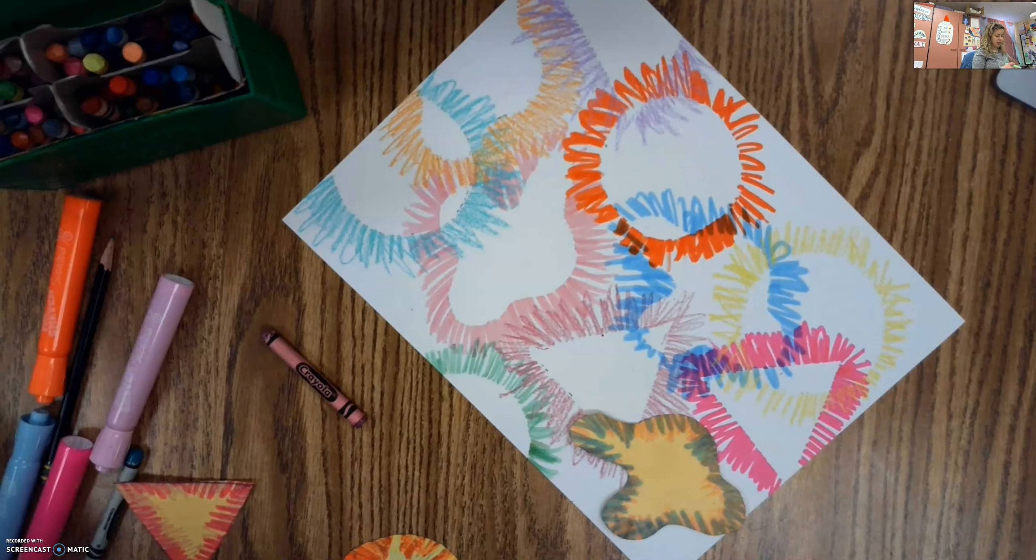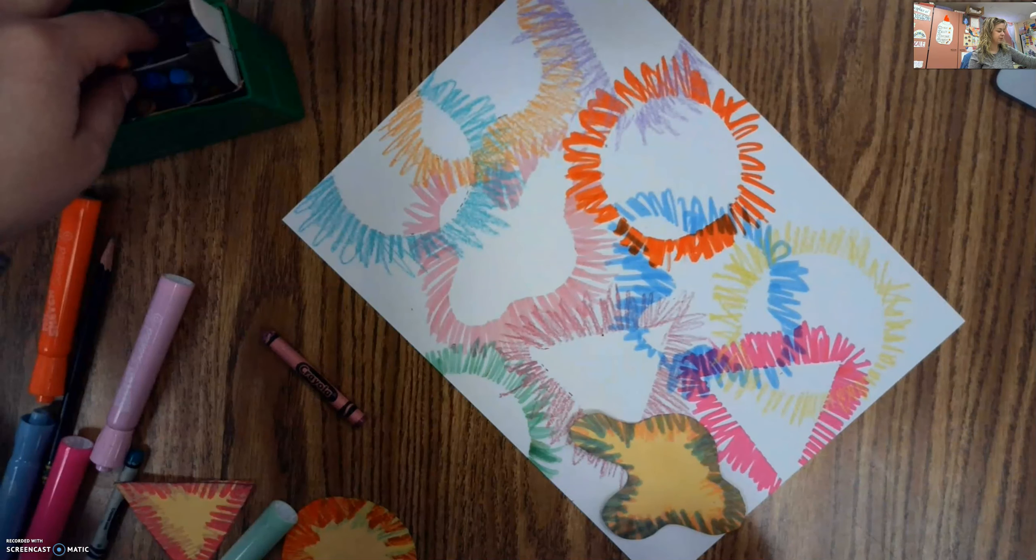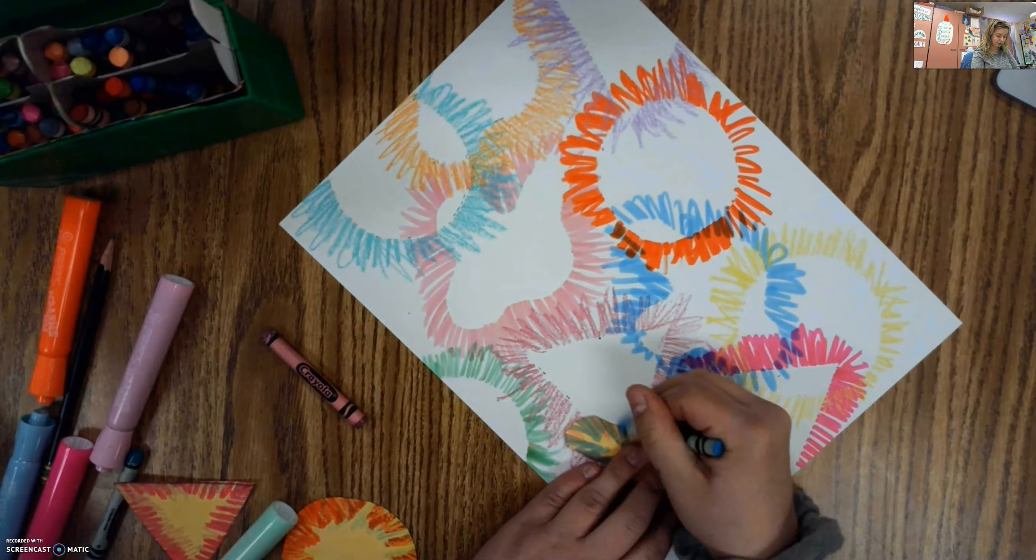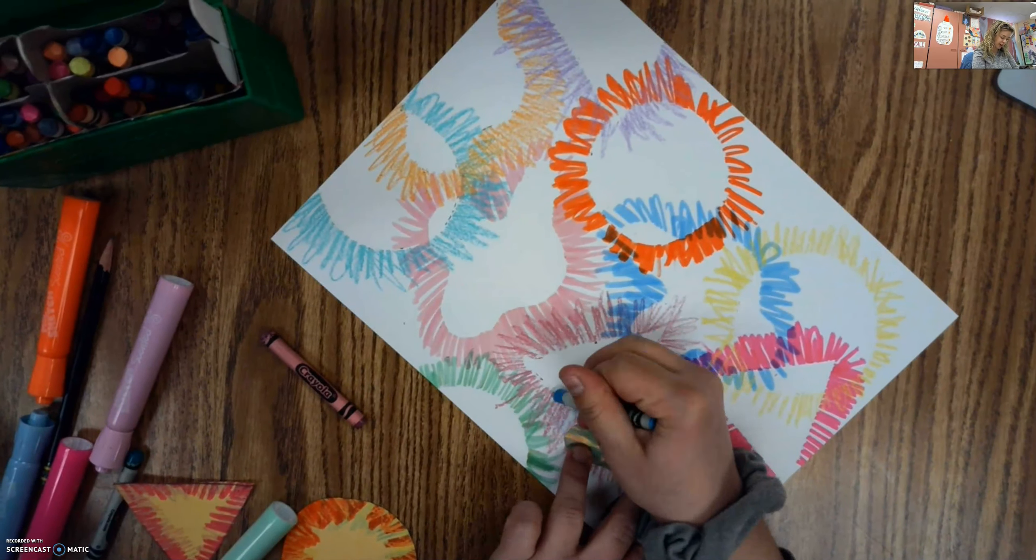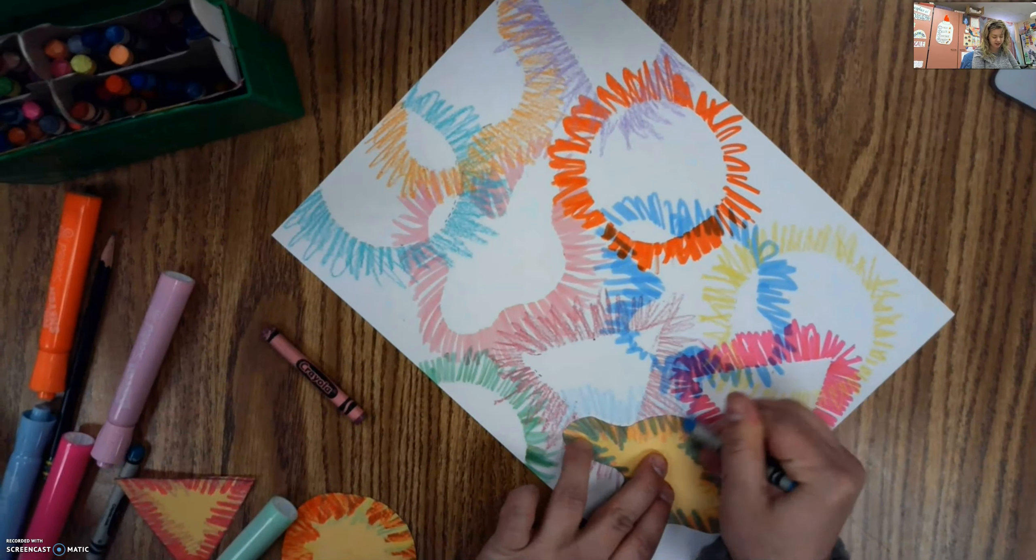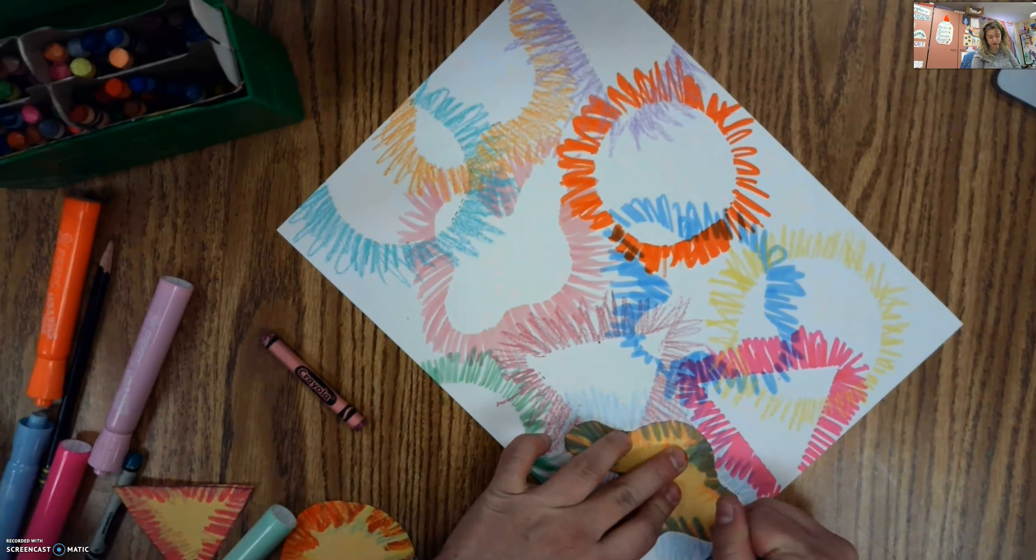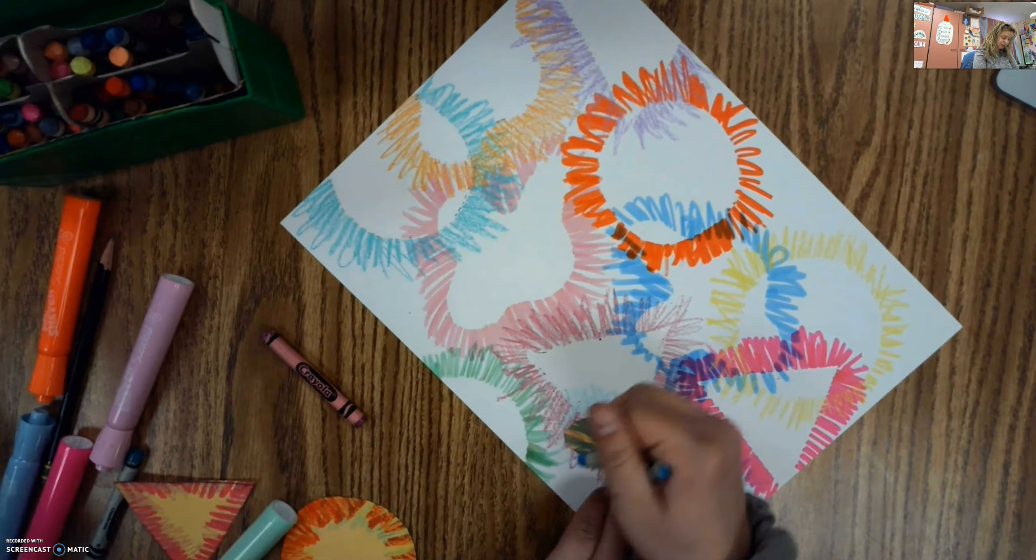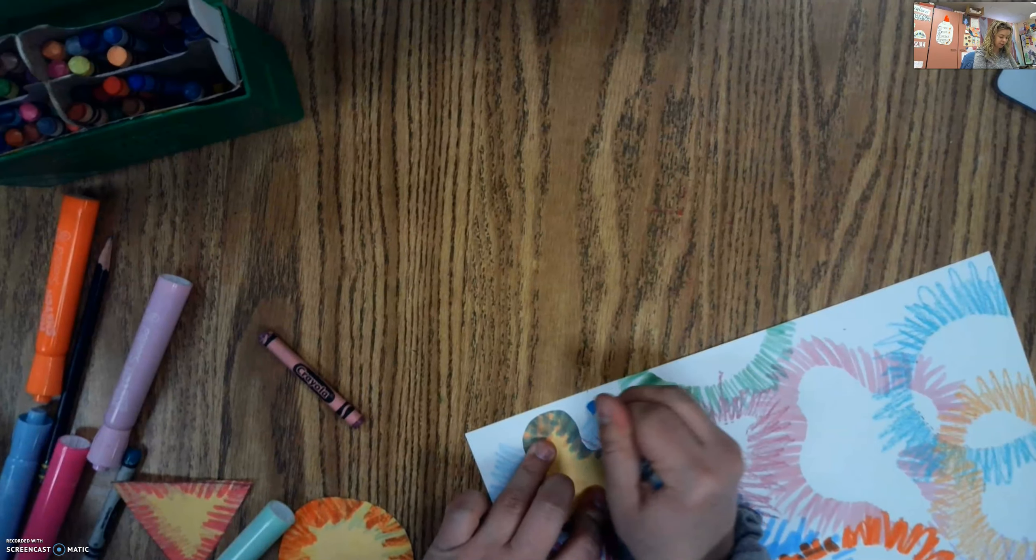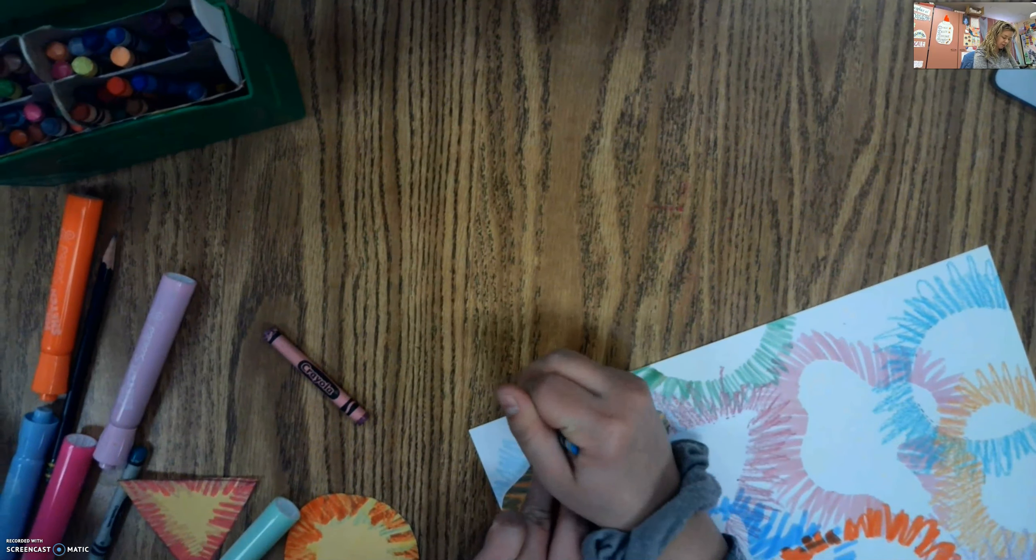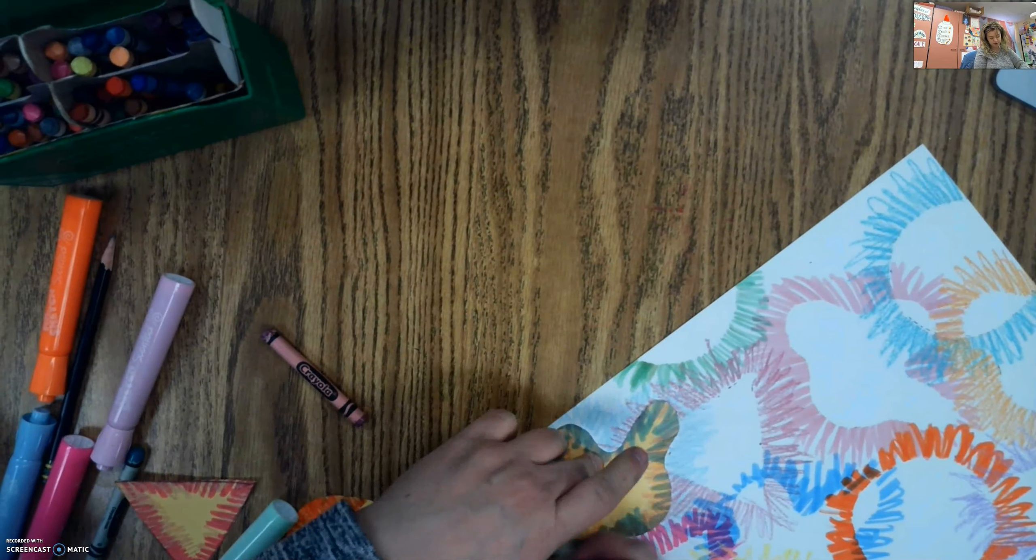But besides that, I can't wait to see how your guys's projects come out. I just have this one left. I think I'm going to use this blue. You can see for the color palette I chose for this one, I did a lot of lighter colors. So you can also think about what colors you're using. You can use just one, two, three colors, or you can use a bunch of different ones. I would suggest at least a different color for each shape just so they stand out a little bit better.